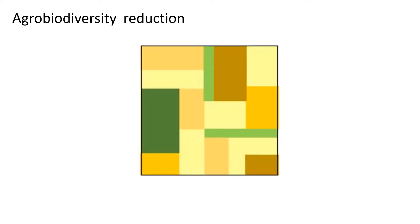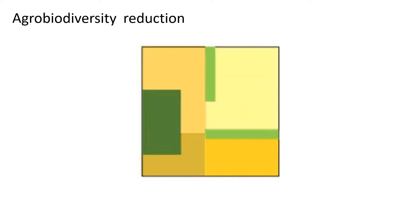The landscape diversity has also been dramatically reduced since the mechanization of agriculture. From diverse fields in which farmers were growing different types of crops interspaced with non-cultivated areas, the number of species grown per field has decreased and non-cultivated areas have been eliminated, resulting in modern-day monoculture fields.